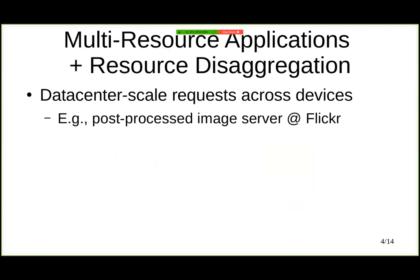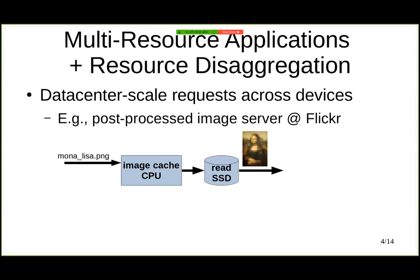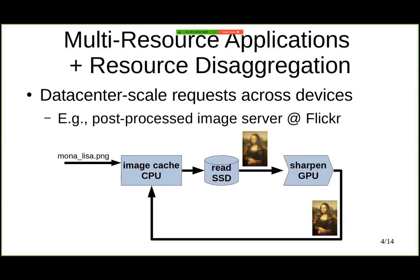At the client front end, we're going to have an image cache server — basically an in-memory cache running on a CPU that receives requests for images. If the image is not currently cached on this server, the CPU application will send a request to read the original image from storage. Then this image is going to be sent to a GPU accelerator to more efficiently post-process it — in this example, applying a sharpening filter. Then this sharpened image is going to be returned to the CPU, stored in the in-memory cache, and served from there on future requests to the clients.